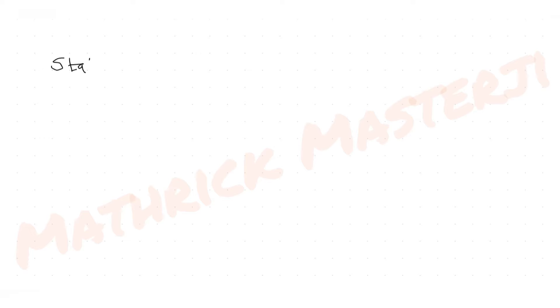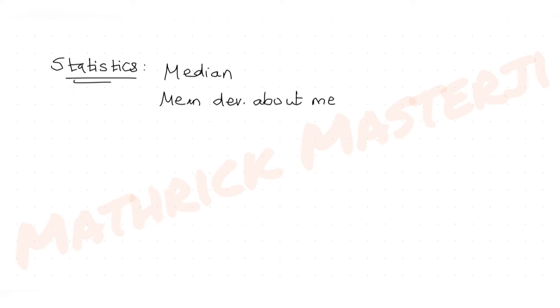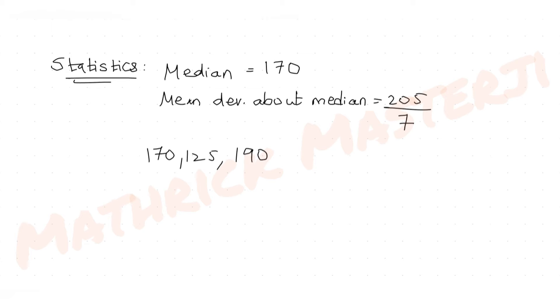Today's question is from the topic of statistics. The question tells us: let the median and the mean deviation about the median be 170 and 205/7 respectively. There are seven observations: 170, 125, 190, 210, 230, A and B. We have been given the median and mean deviation about the median, and the question asks us to find the mean deviation about the mean of these seven observations.